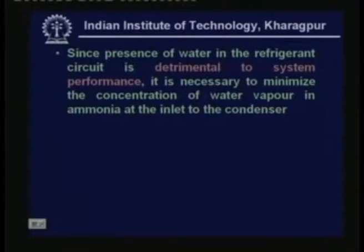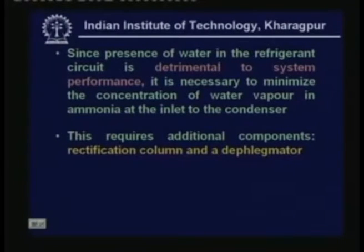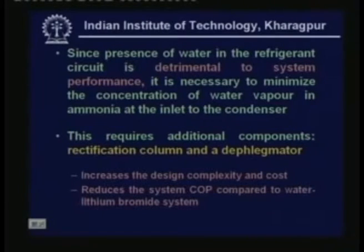So what we have to do is minimize the concentration of water vapor in ammonia at the exit of the generator or at the inlet to the condenser. We have to ensure that almost pure ammonia vapor goes to the condenser. This requires additional components — namely a rectification column and a dephlegmator. As a result, the design of ammonia water systems is more complicated and the cost is higher. Additionally, due to these additional components, the system COP is also reduced when compared with water lithium bromide systems. These are the main differences between the two systems.